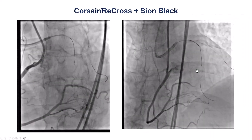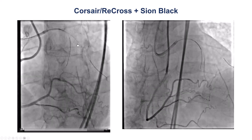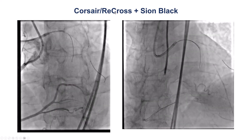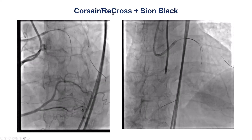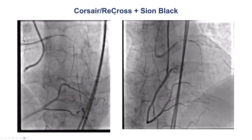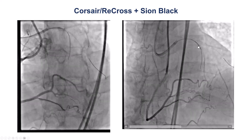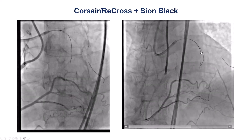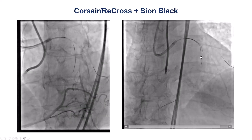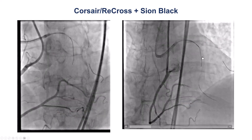We tried with a Corsair microcatheter, but the wire was going in a different plane. We then used a Recross, which is a dual-lumen microcatheter with two over-the-wire lumens. Unfortunately, despite trying to retract the guide wire, we were clearly not into the vessel — probably going into some septals proximal to the proximal cap.